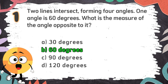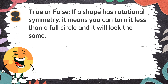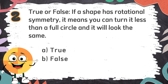Opposite angles formed by intersecting lines are equal. Number 2: True or false — if a shape has rotational symmetry, it means you can turn it less than a full circle and it will look the same. The choices are: A. True, B. False.